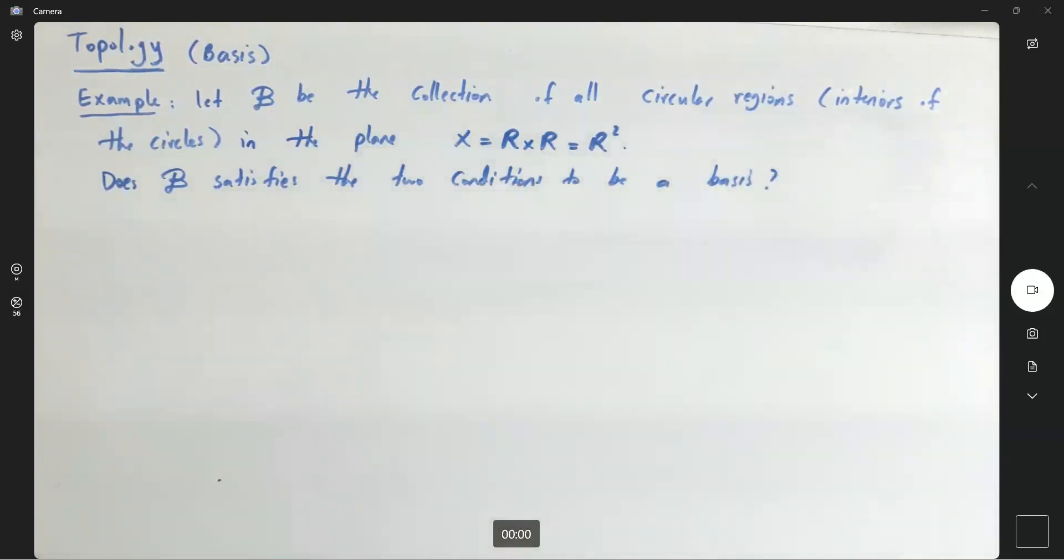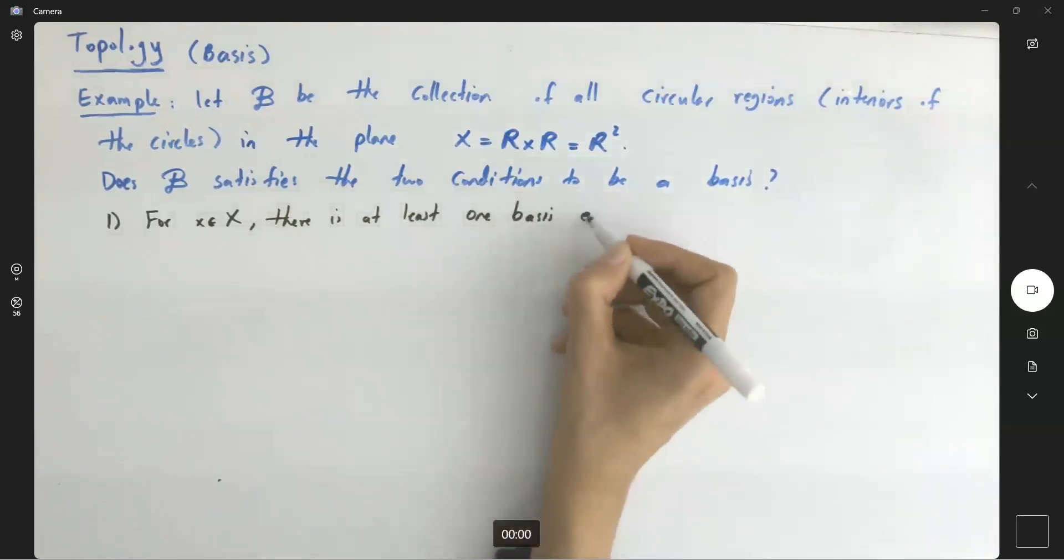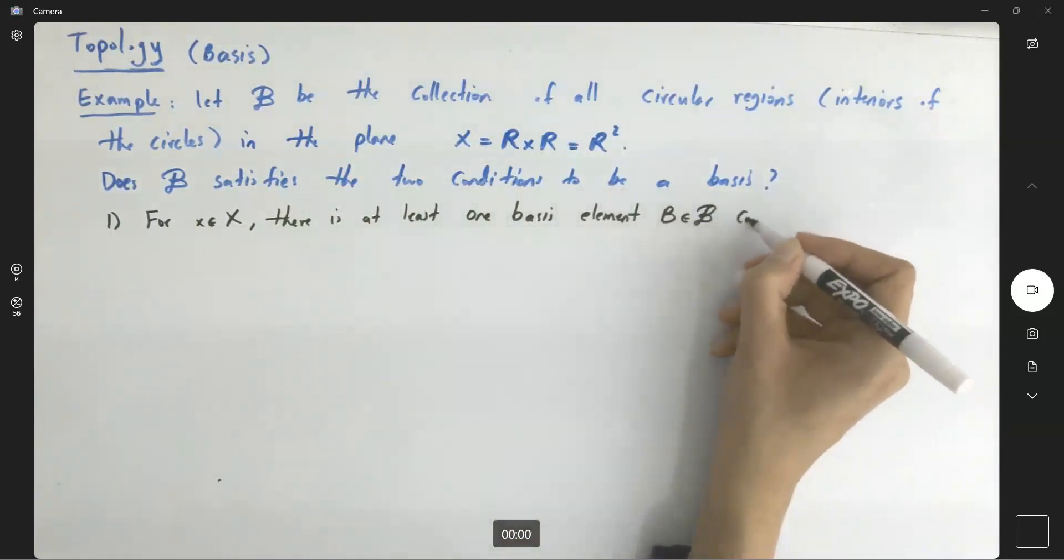Very good. Remember that the very first condition says, let's write it in a different color. The very first condition says for each X in X in the space given to us, there is at least one basis element B containing X.